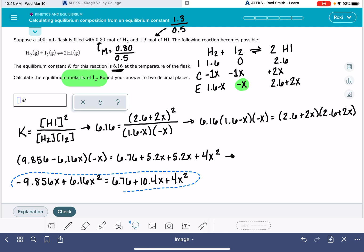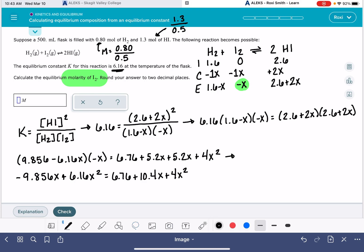That is equal to 6.76 plus 10.4X plus 4X squared. So now I'm going to combine like terms that are on the left side and the right side. I'm trying to turn this into a polynomial. So I'm going to move everything over to the left-hand side. Negative 9.856X plus 6.16X squared minus 6.76 minus 10.4X minus 4X squared. That is going to be equal to 0.